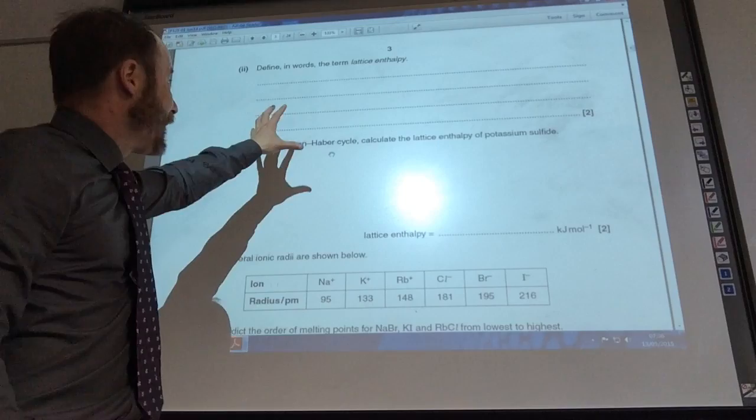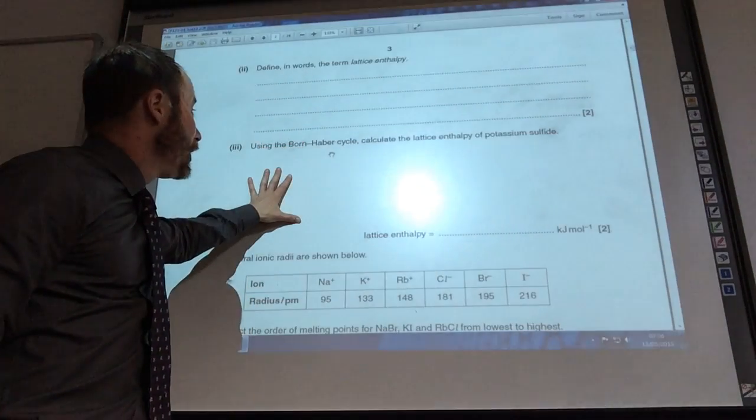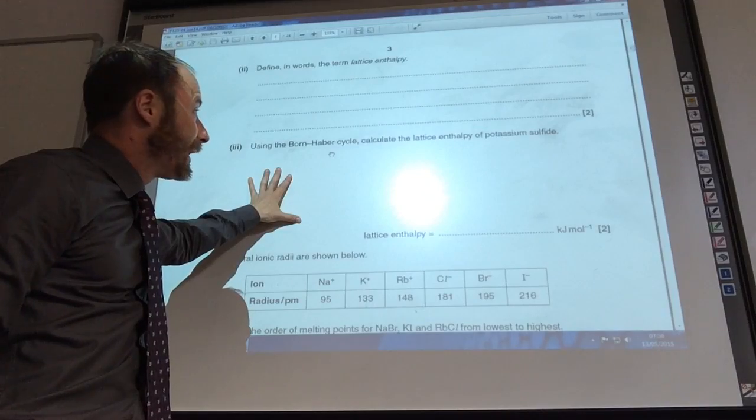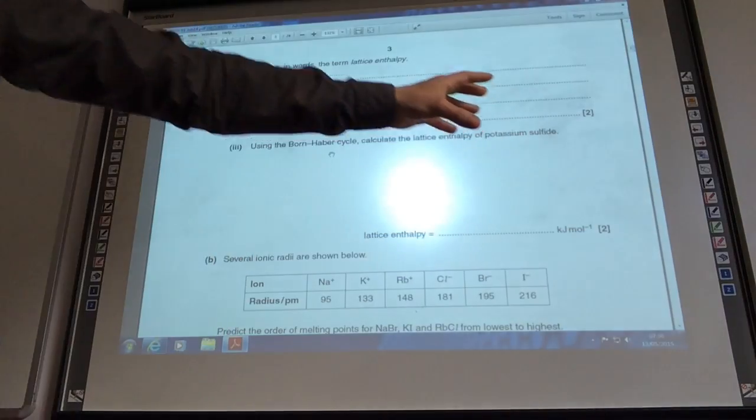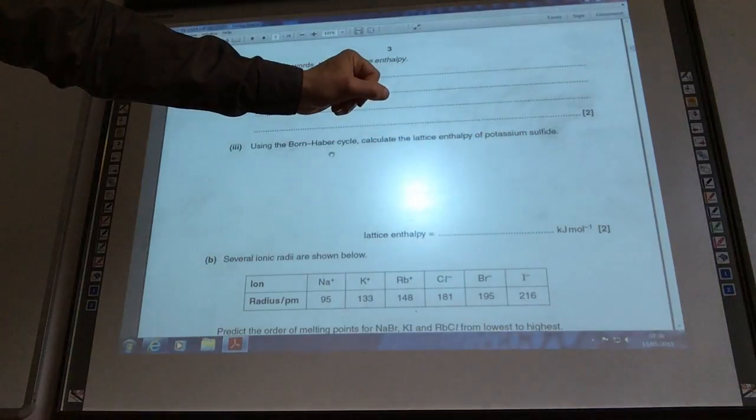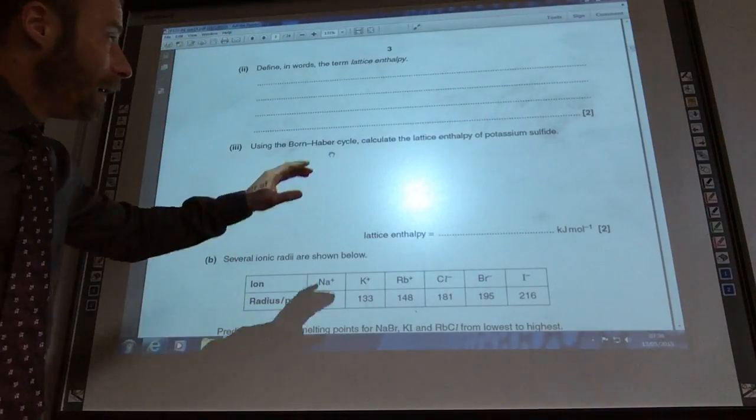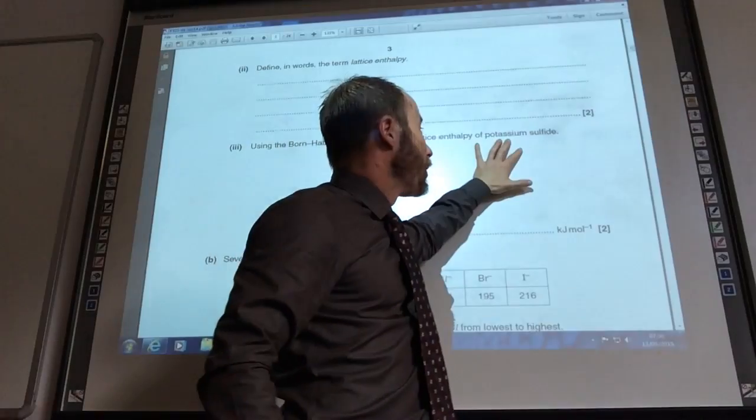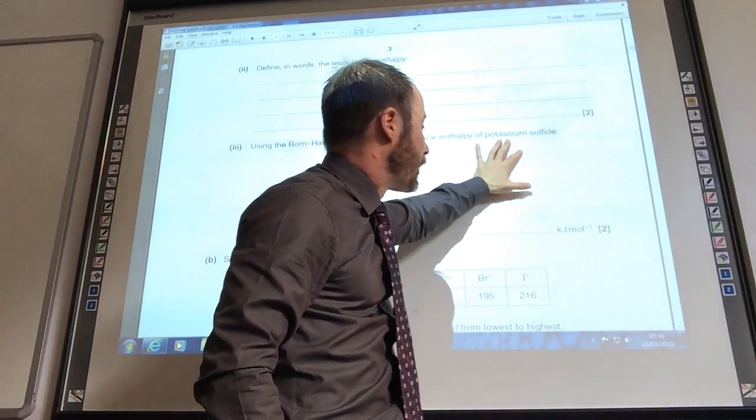Okay, so you've got a basic definition there which should be too difficult for you to do, and then you need to use the Born-Haber cycle to calculate the lattice enthalpy of potassium sulfide. Now I won't go through this. The answer is going to be minus 2116 kJ per mole. The key mistake that people make is they don't times your potassium values by 2 as you go through the cycle.